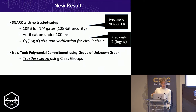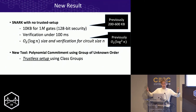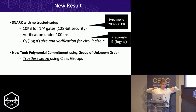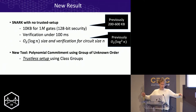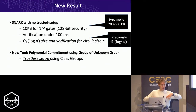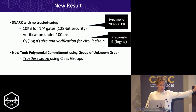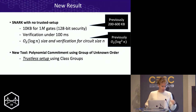A SNARK is a zero-knowledge proof. In simple terms, if you have an encrypted transaction, I can prove to you that the transaction is valid, and you can check that without knowing any of the details. The SNARK part means verification is super efficient — you can get a proof that the entire blockchain is correct, maybe 15 kilobytes, and it takes maybe 150 milliseconds to check.